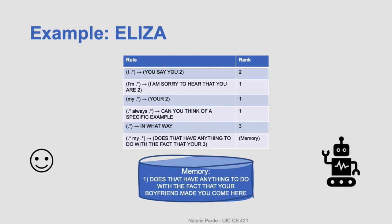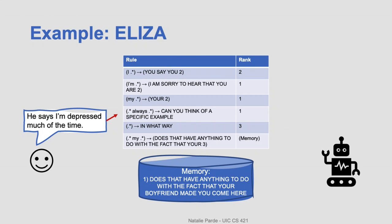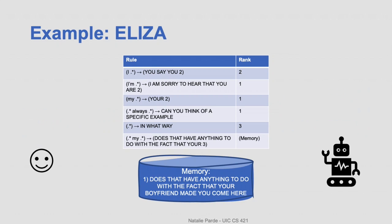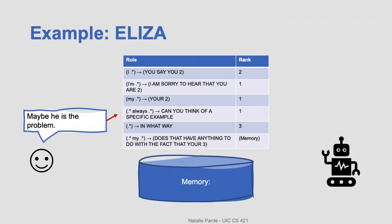The user elaborates further, and we match this new input with a pattern searching for 'I'm' and output the result. In the final step, the user says something not matched by any pattern aside from the default. Now we have a choice — encoded internally as a rule — to either use the stored fact from memory or output the default response. We decide to pop the fact from the memory stack and output it to the user.